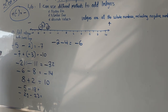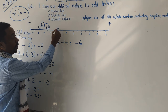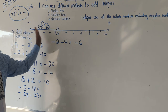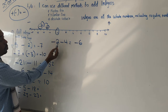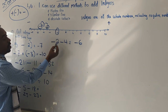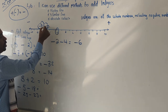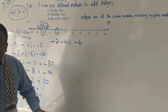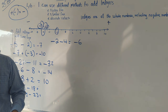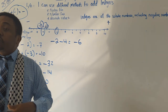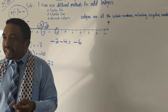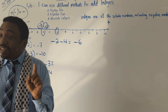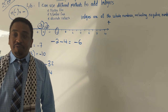This proves our answer of negative 6 is correct. So the number line is a useful check. But sometimes you have big numbers and can't always draw a number line, so you need to remember the rule: if you are adding two negative numbers, you add the two numbers, but the answer will be negative. Don't forget that.